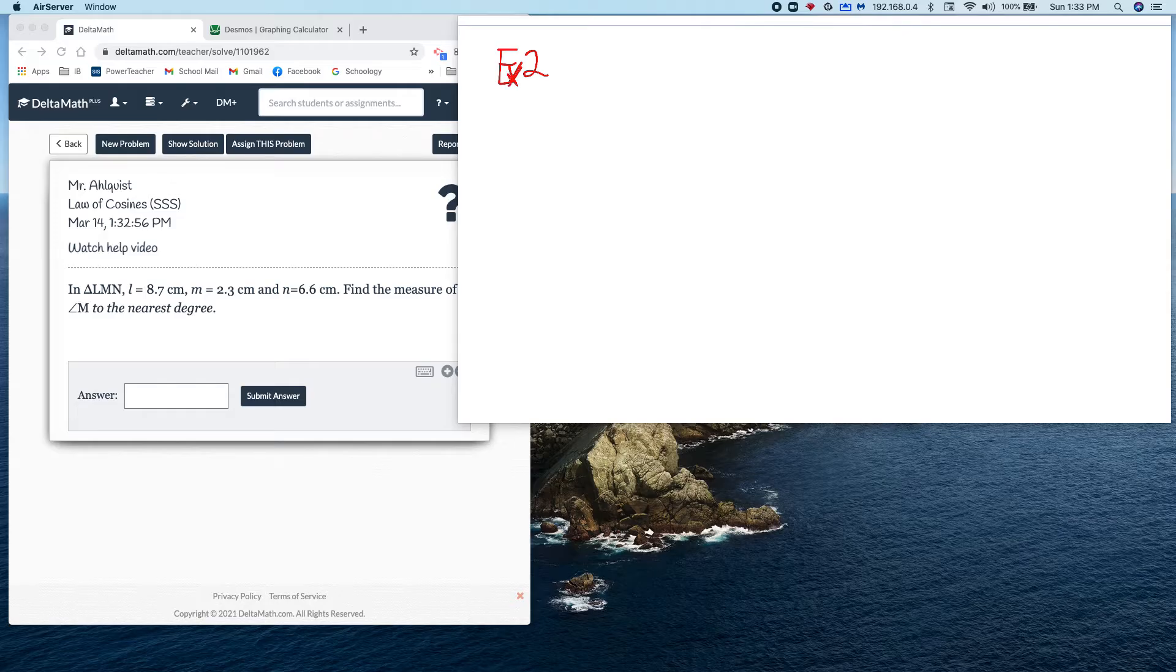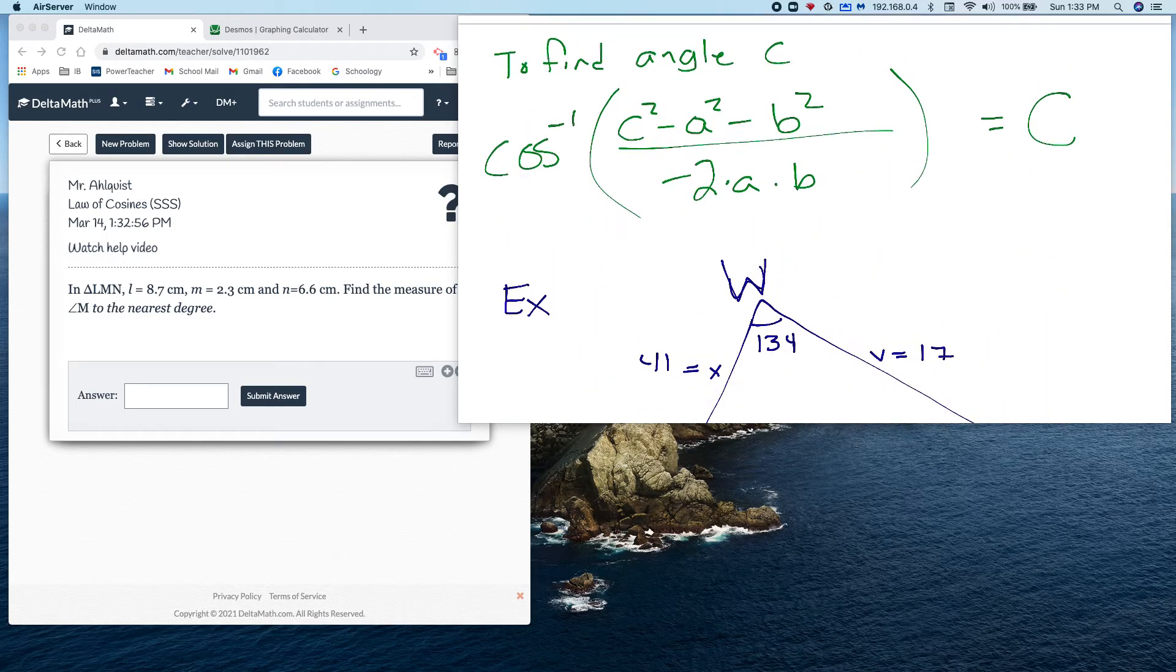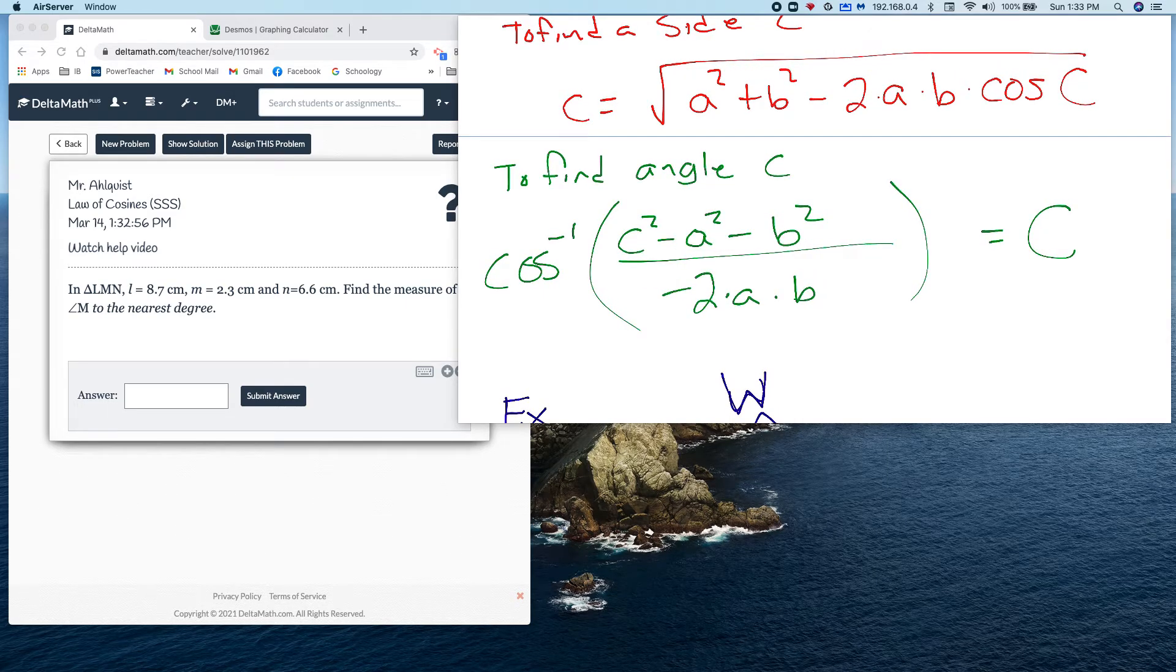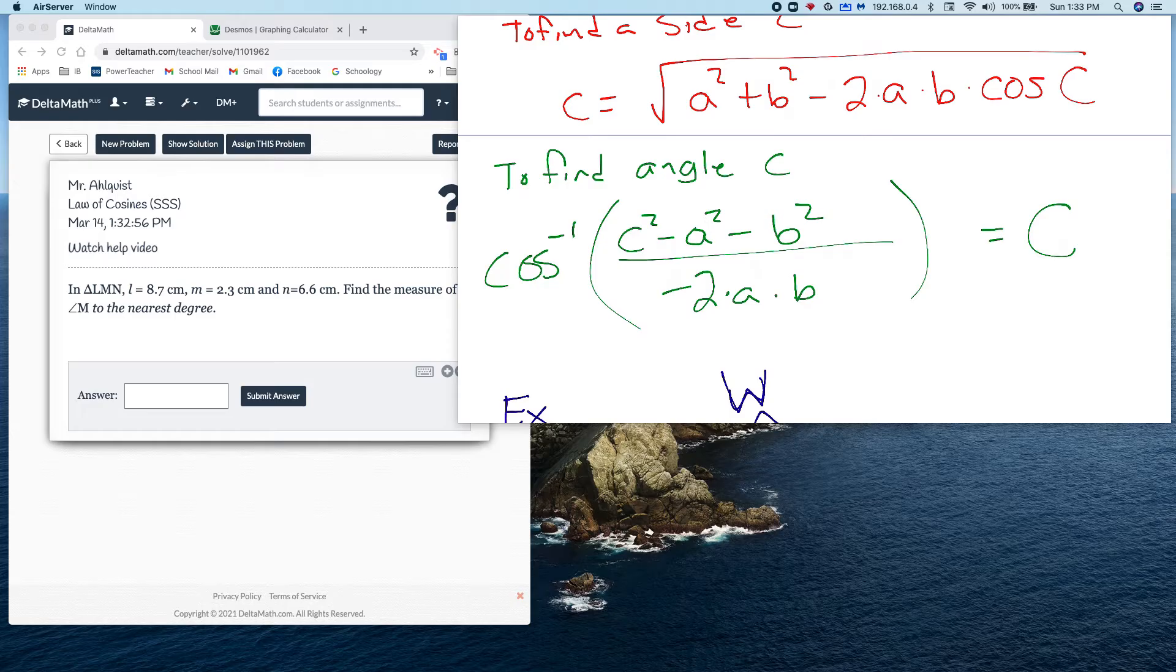So when we're finding the angle to the nearest degree, here's example two. We're going to find an angle, so we're going to use that second idea. But again, you got to label this thing right. You got to label it appropriately. So we got L, M, N. It doesn't matter where you label them, as long as once you label it, L is 8.7, M is 2.3 - I know that they don't look that way - and N is 6.6. It doesn't really matter, as long as you've labeled it. And I'm supposed to find angle M to the nearest degree.